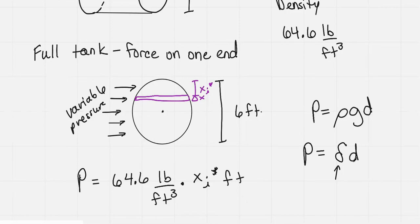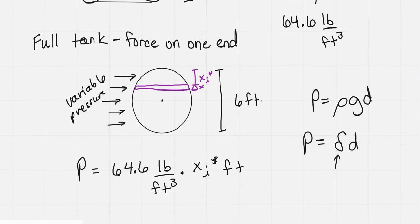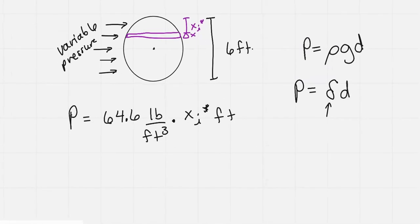When we do our units here, we get 64.6 x sub i star, and this would be pounds per square foot. So that's what the pressure is, that many pounds per square foot.